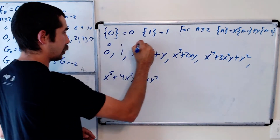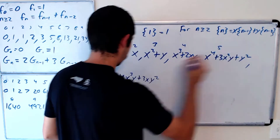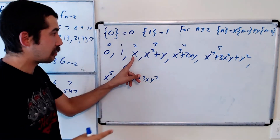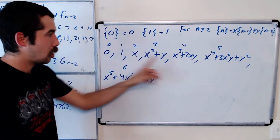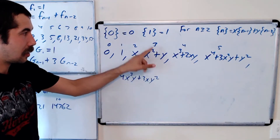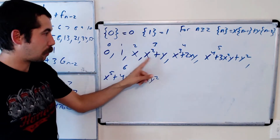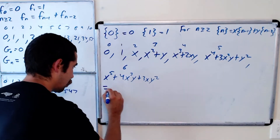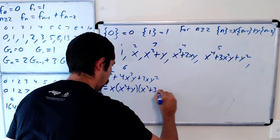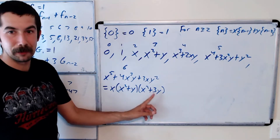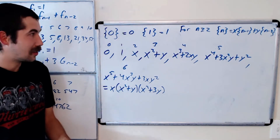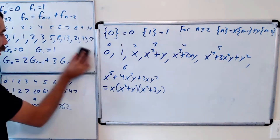So this is the 0th through 6th Lucas polynomial. We can check that the 2nd Lucas polynomial is just x — does it divide all even-indexed Lucas polynomials? Yes, we can factor out an x from {4} and {6}. What about the 3rd Lucas polynomial, x² + y? Does it divide {6}? Well, {6} = x⁵ + 4x³y + 3xy² factors as x times (x² + y) times (x² + 3y), so yes — {3} divides {6}.